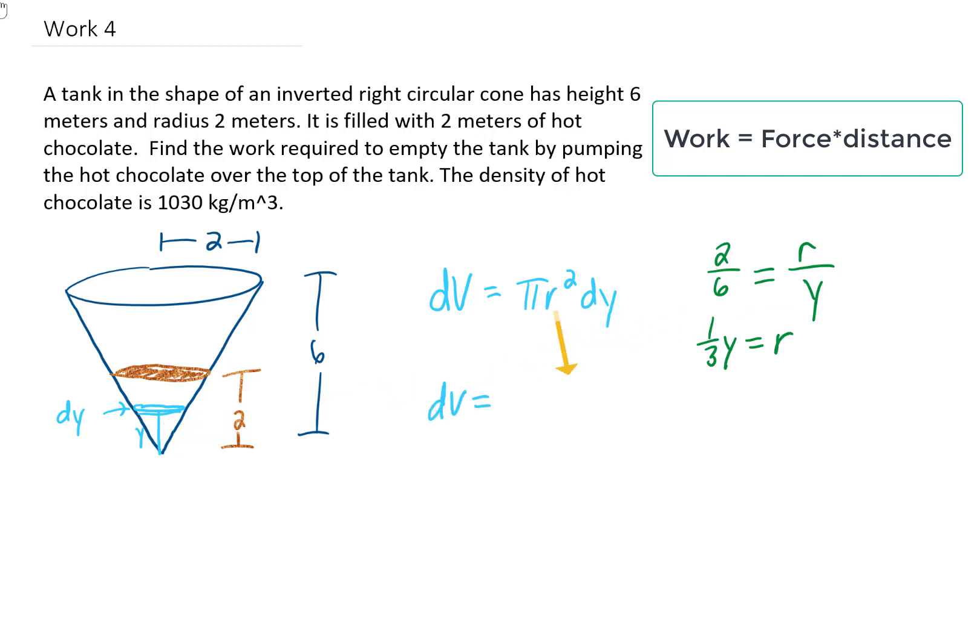If we plug that into this formula to get the volume of this little slice of hot chocolate, we get (1/9)πy²dy as the volume of each one of these little slices.